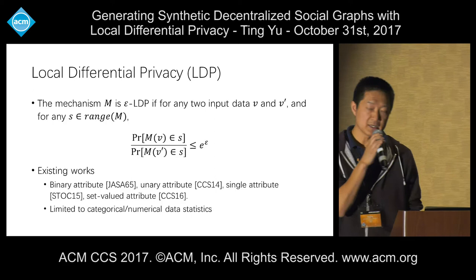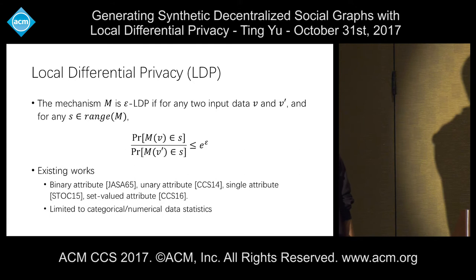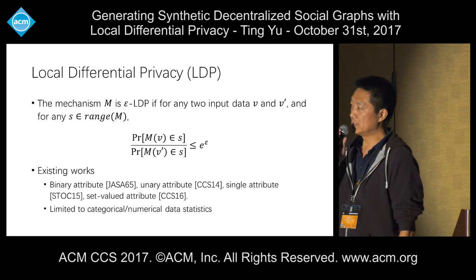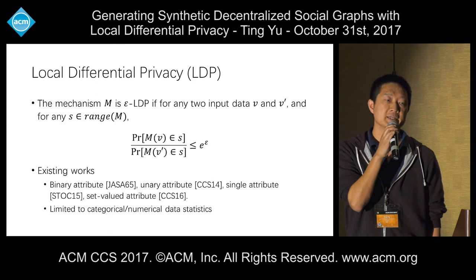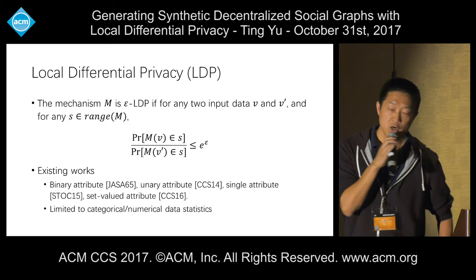Recently, a lot of work has been done under the local privacy model. Early work handled binary attributes—for example, yes/no answers to sensitive questions. More recent work covers unary attributes and set-valued attributes. Most computation is about statistics, such as which portion of users answer yes or which value is most popular. But here we are dealing with graphs, and we want to generate graphs, not just statistics.